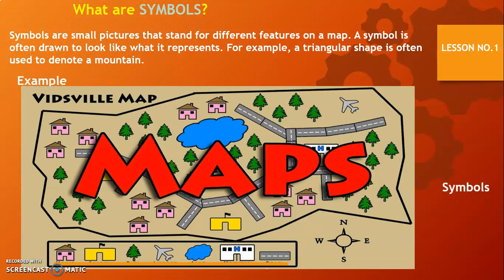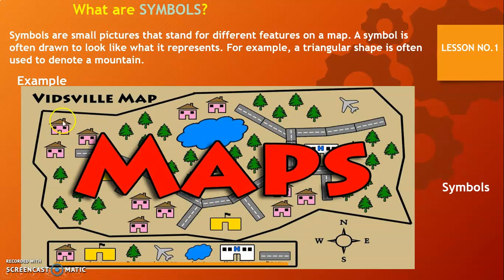So, what are symbols? Symbols are the small pictures that stand for different features on a map. These features include homes, trees, schools, hospitals, lakes, and roads. All of these are the features of a map, and all of these small drawings are called symbols.